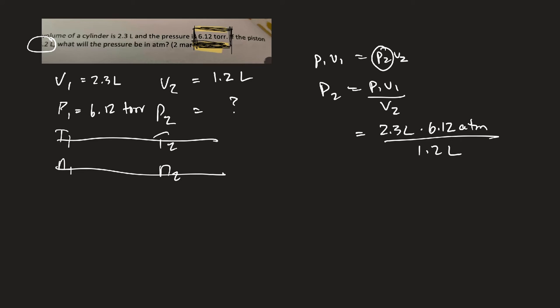Let me get my calculator. I get 2.3 times 6.12 divided by 1.2. 11.73 I'm getting. 11.73 atmospheres.